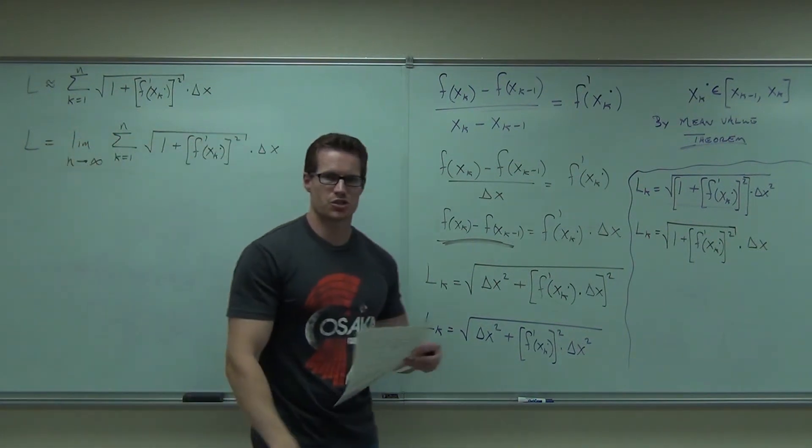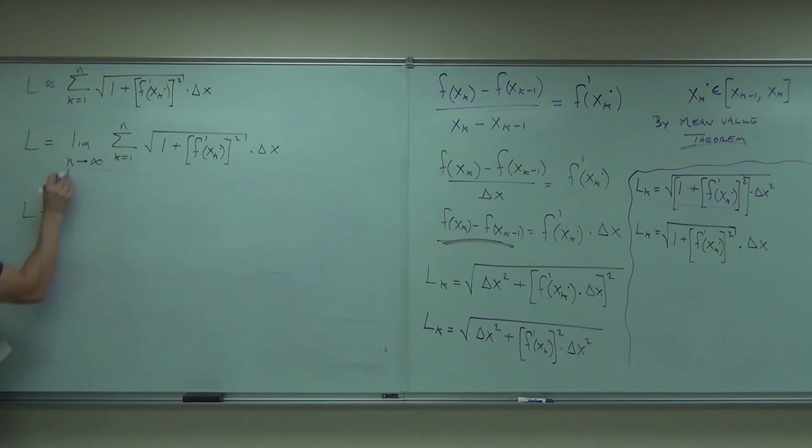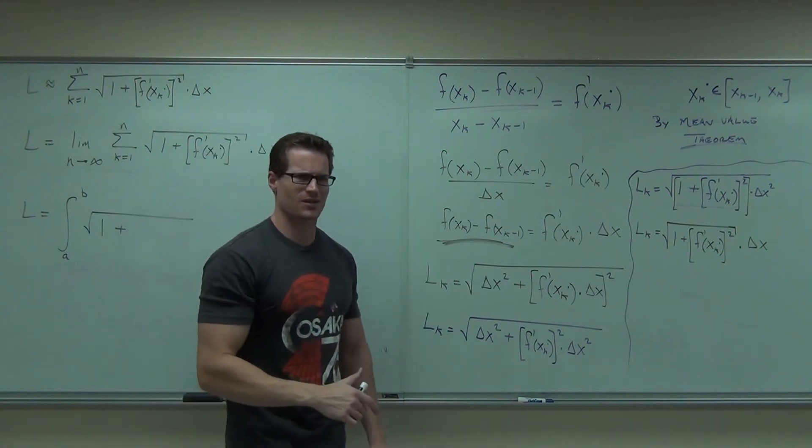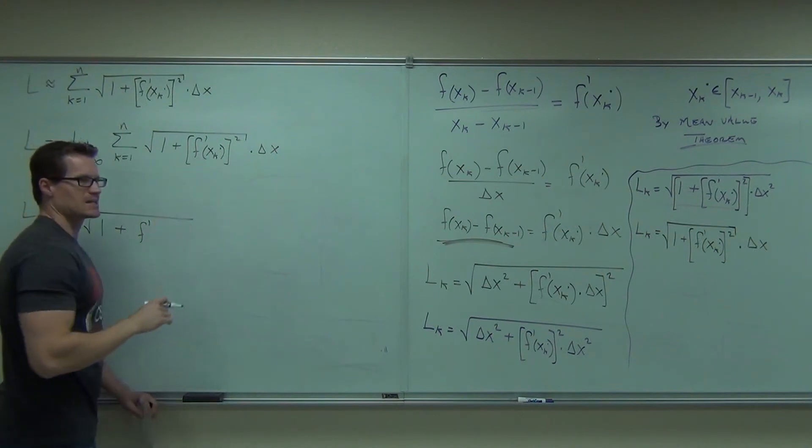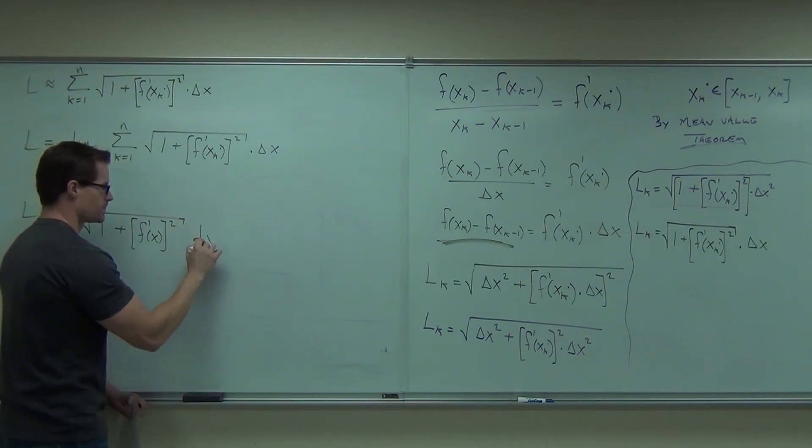Now when you take a limit, we've noticed just by practice what these pieces mean. Can you tell me what the limit of a sum becomes? An integral. And it goes from where you start to where you stop. The square root, hey, that's a square root. The one is a one. Plus is a plus. F prime, look at it, we're going to have a first derivative inside of our integral. Isn't that interesting? That's kind of weird. But that's what that says. It says you have a first derivative of a function. What's x k become? Just x. Don't forget to square it. And what does the delta x become? dx. That's it.